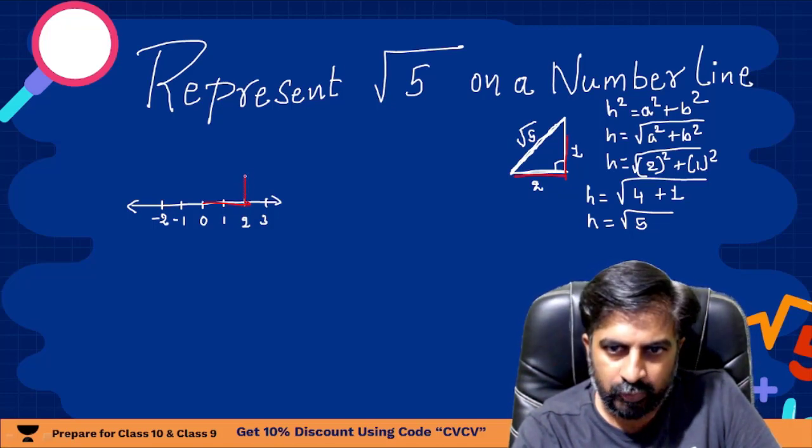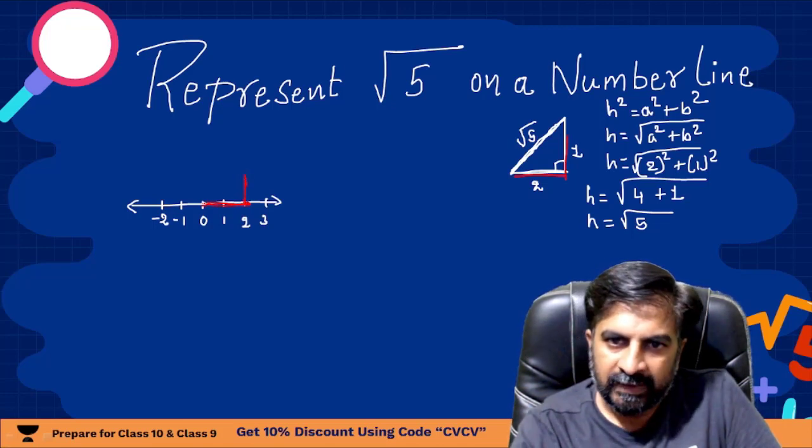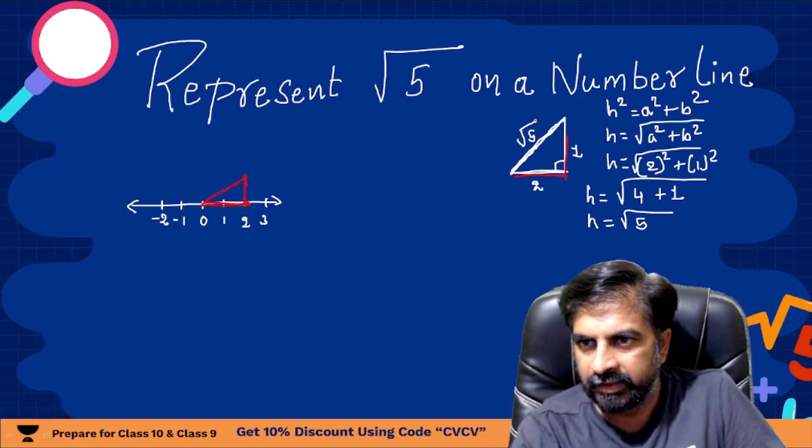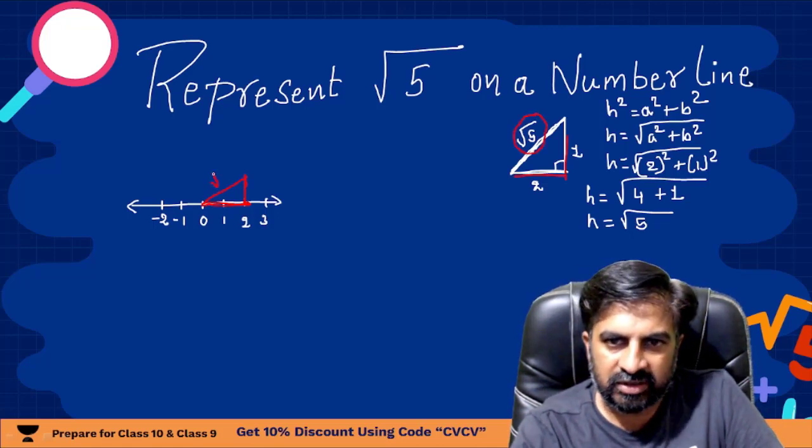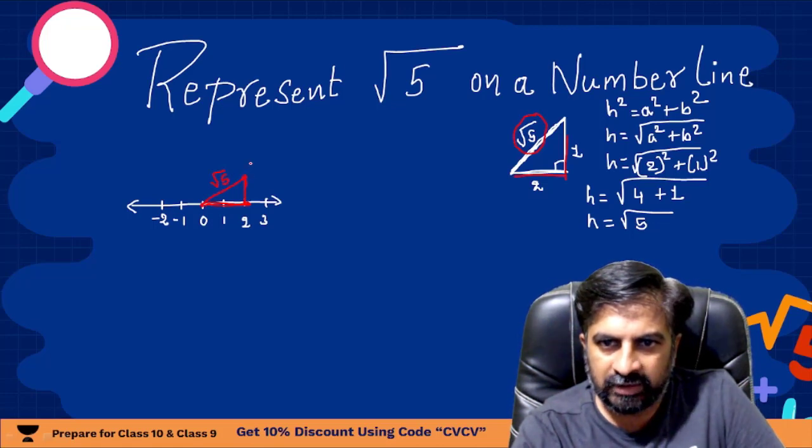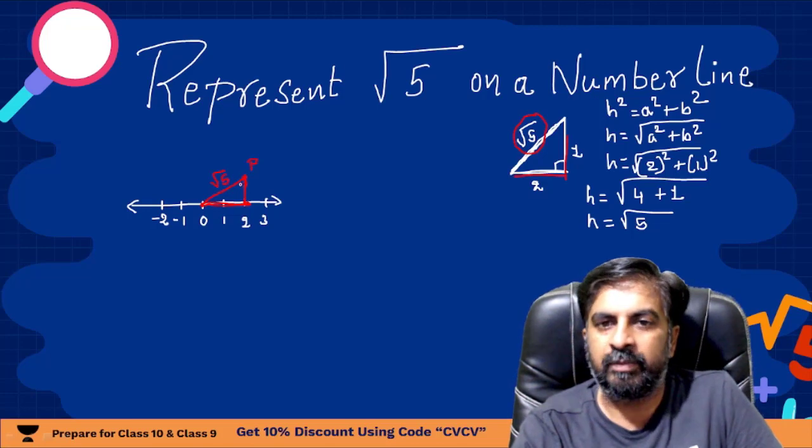Now this is 1 unit, so here you need to extend this one unit. So this 2 centimeter, this 1 centimeter. Now what will be this distance if this is 2 and 1? So here we are getting root 5, so this distance will be root 5 distance from the 0. Let me take this point as P, so OP will be root 5.